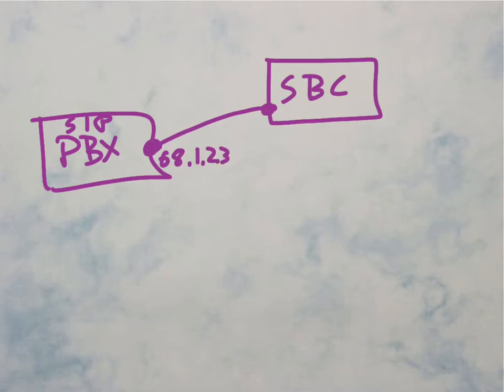and that this guy is 216.1.5.6. So what we've done is assign a public IP address on the session border controller for this peering, 216.1.5.6.